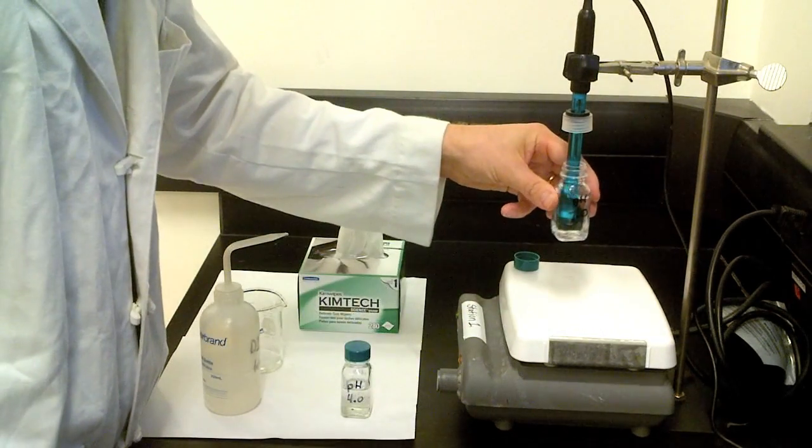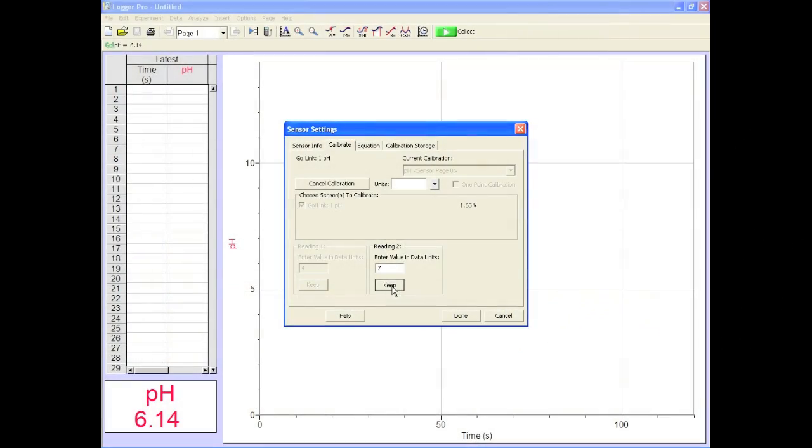Repeat the process with the second standard, making sure the voltage is stable before clicking keep. Finish it off with a click on Done.